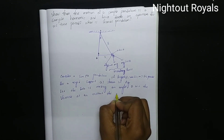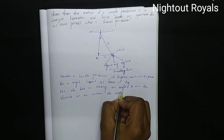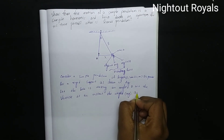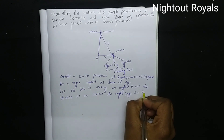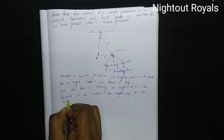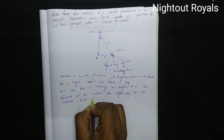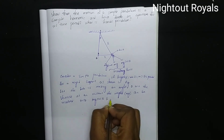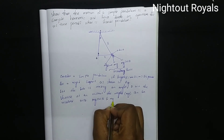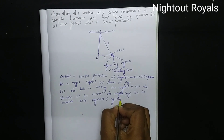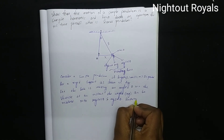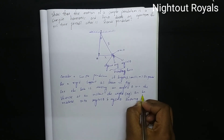The weight Mg can be resolved into two components: Mg cos theta along the string, and Mg sin theta as the restoring force.